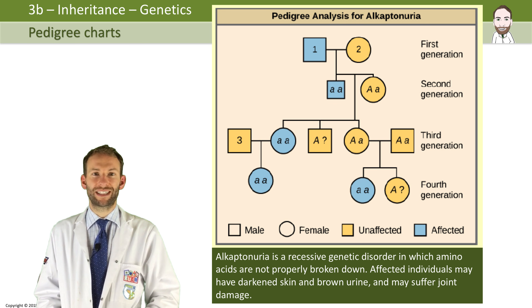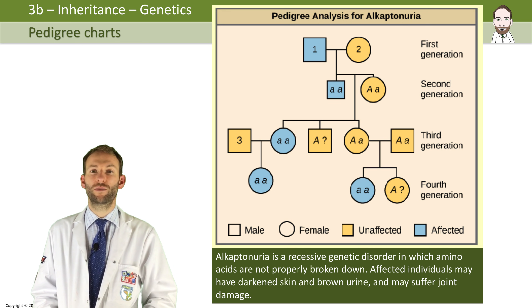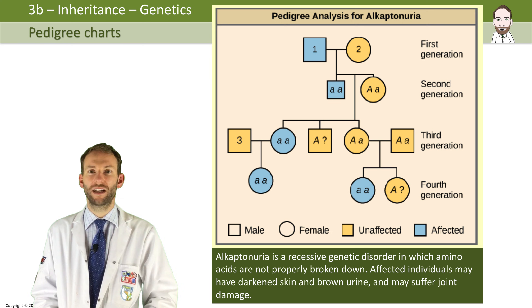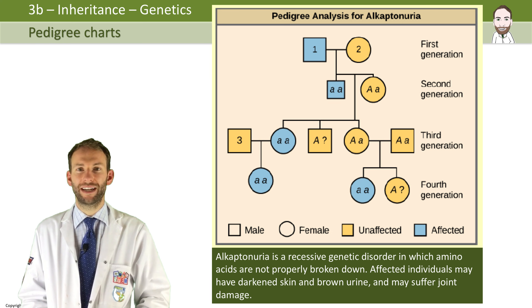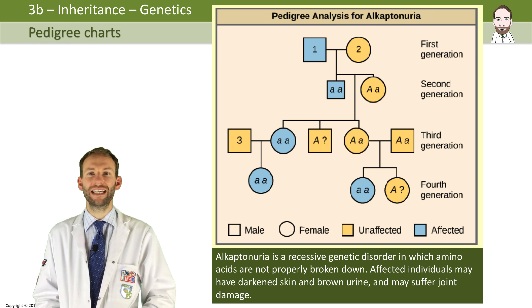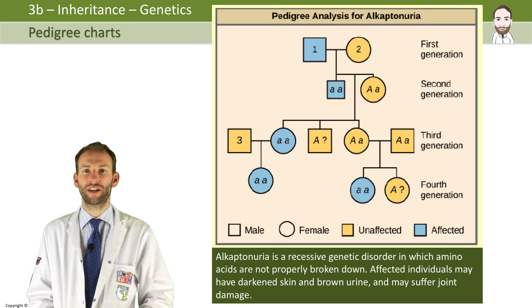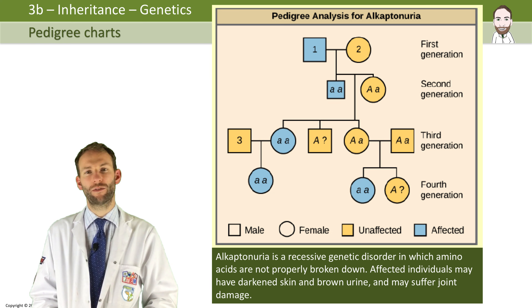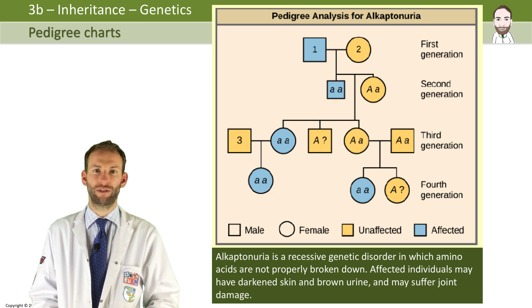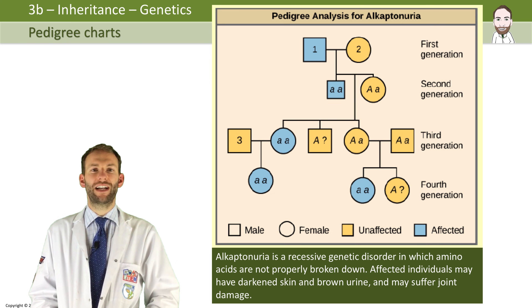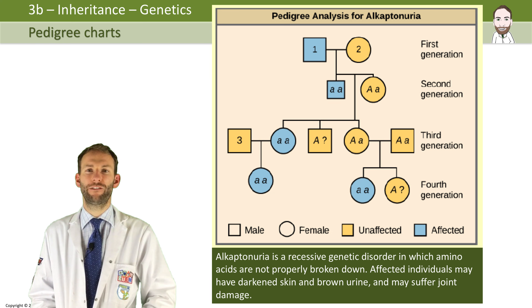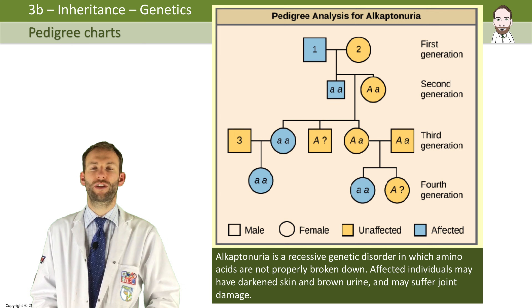We know it is recessive because we can see in the affected circles and squares that there is little a, little a. So we can see that it's caused by these homozygous recessive alleles. But you could also work it out from what the parents have and what the children have — whether it's a dominant allele or recessive allele. Can you work out what the genotypes would be for individuals one, two, and three?